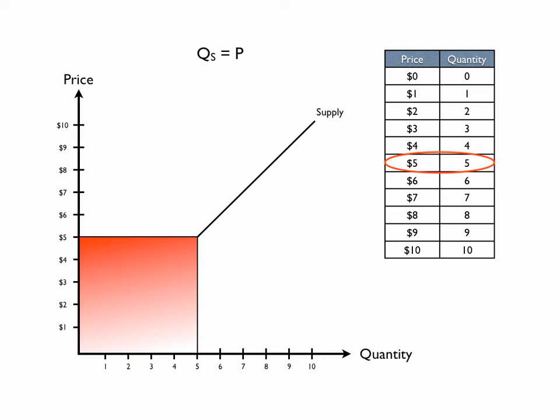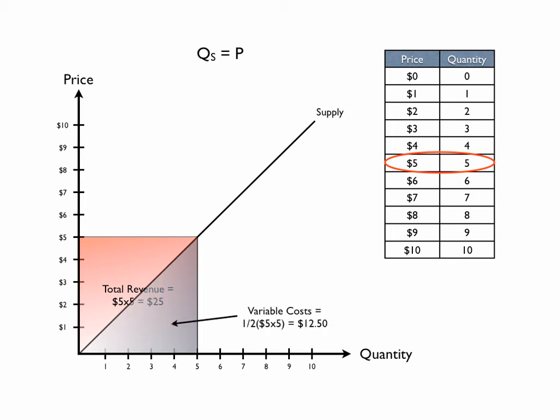Using a price of five, suppliers are willing to bring five units to the market. Their total revenue will be $25 — five units times five dollars each. Of that, $12.50 are the variable costs of producing those five units. The area above the supply curve and beneath the price line is what we call producer surplus — the value that producers receive above and beyond their variable costs. Total revenue is $25, variable costs were $12.50, therefore their surplus is $12.50. This is not profit because it does not include the fixed costs, only the variable costs. But this is the surplus to producers from producing five units.